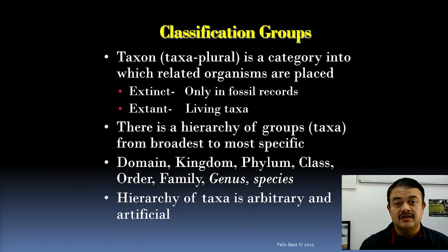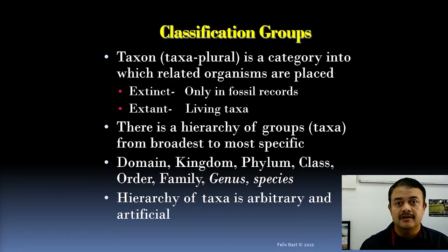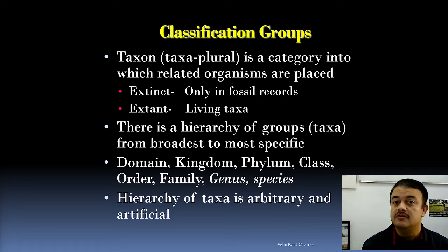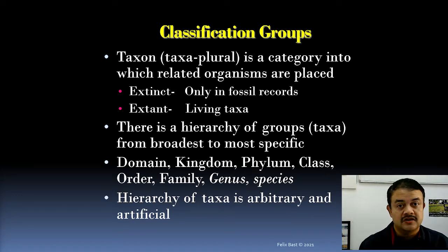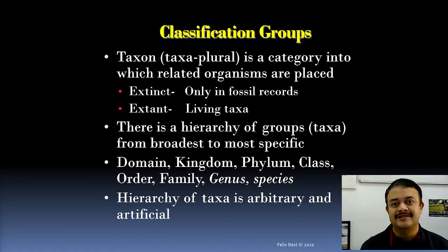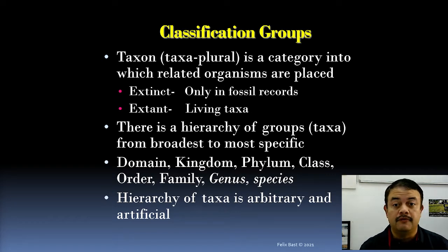A taxon or taxa doesn't only refer to the species level. It could be at higher order levels of the hierarchy as well. Also, taxa need not be extant species — they could be extinct. We have proof either in the fossil record or through the parsimony method, by which we can reconstruct sequences of extinct species. In a phylogenetic tree, the internal nodes represent hypothetical taxonomic groups — we have some evidence, but not hard fossil evidence.